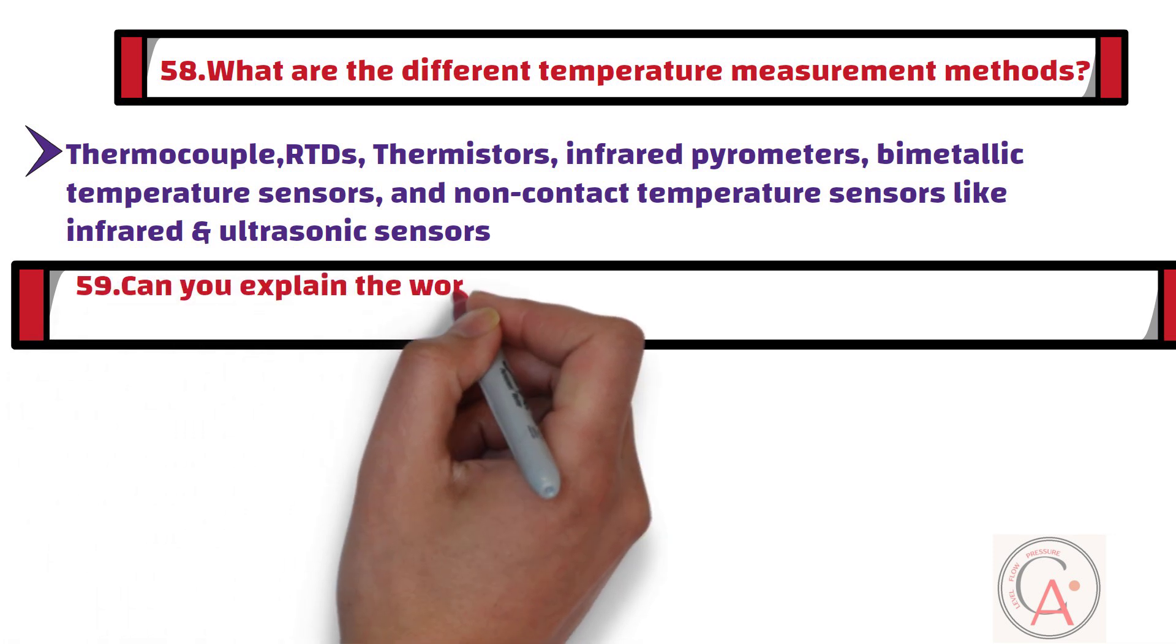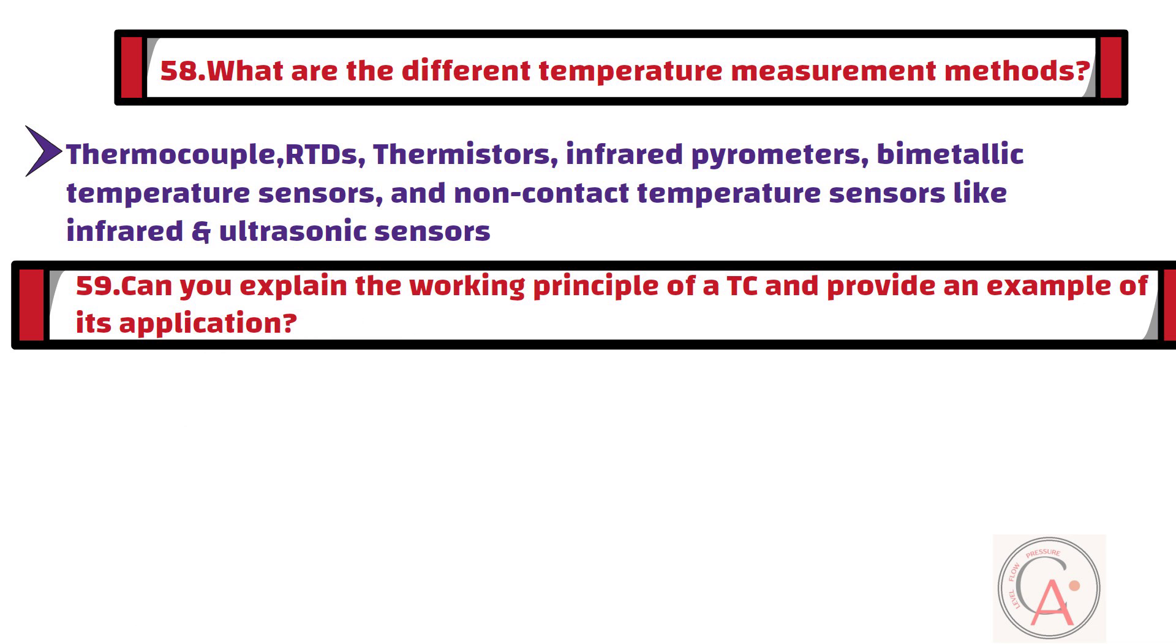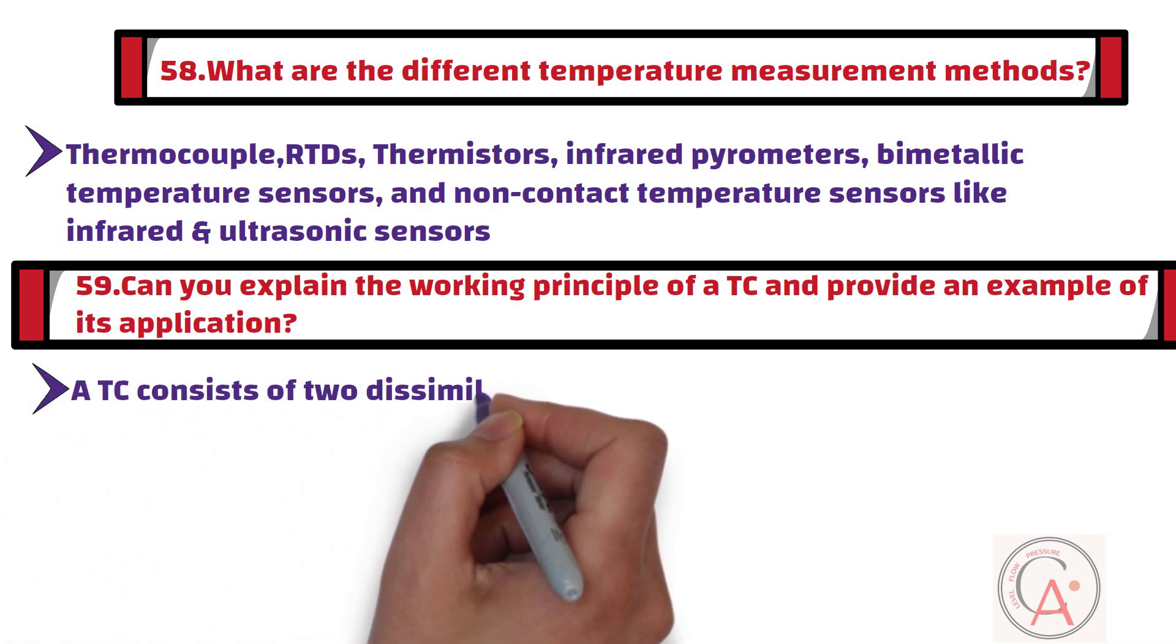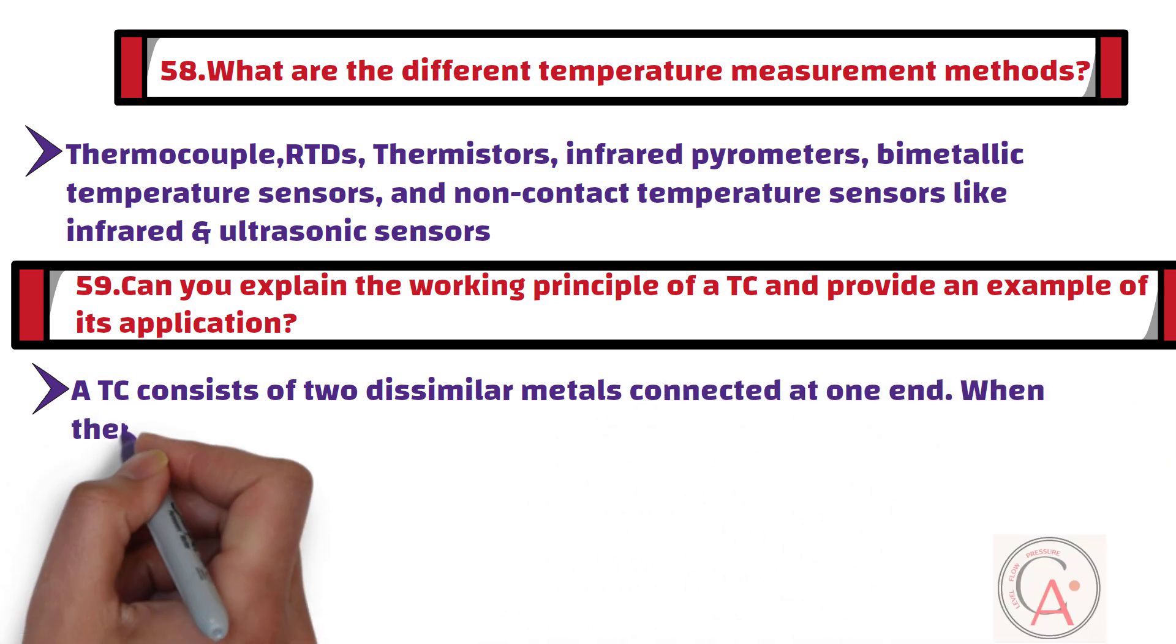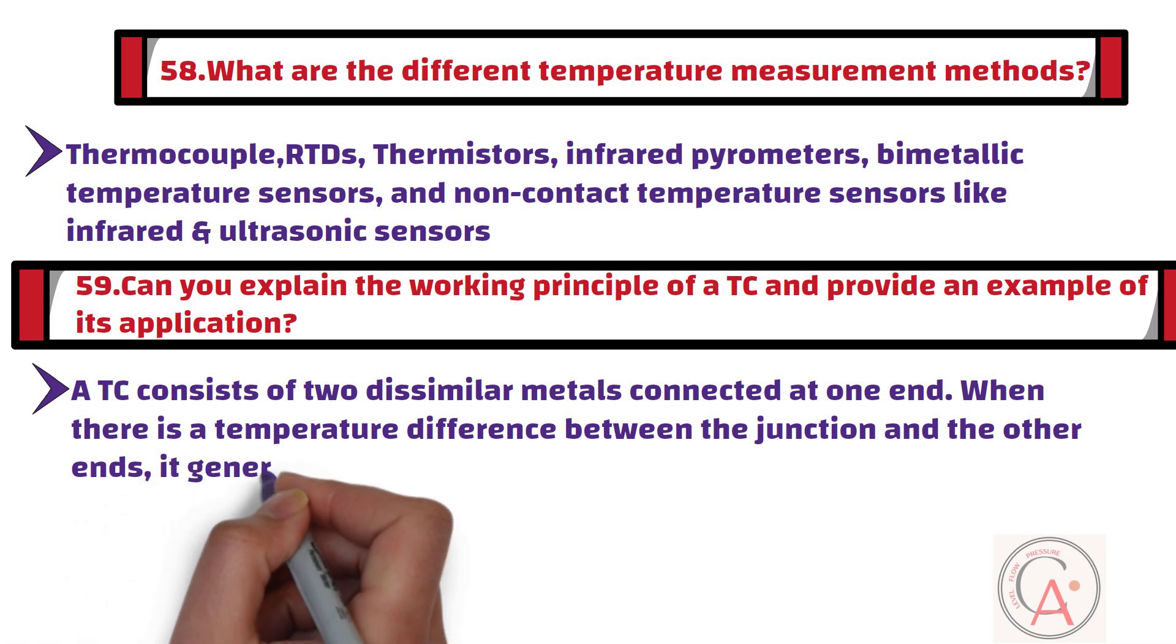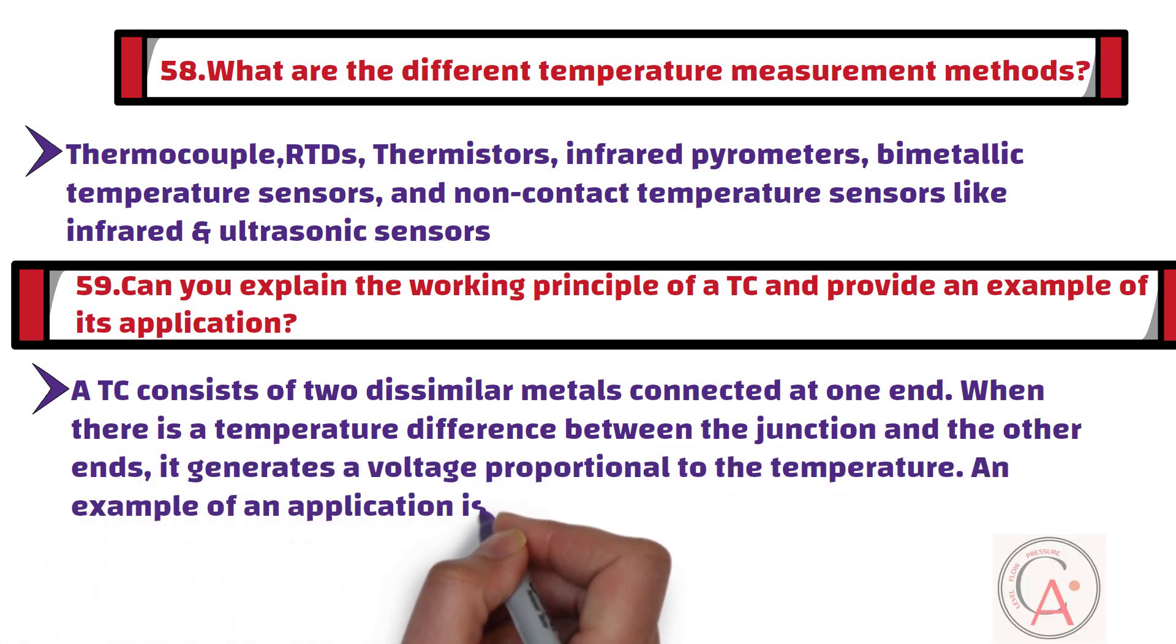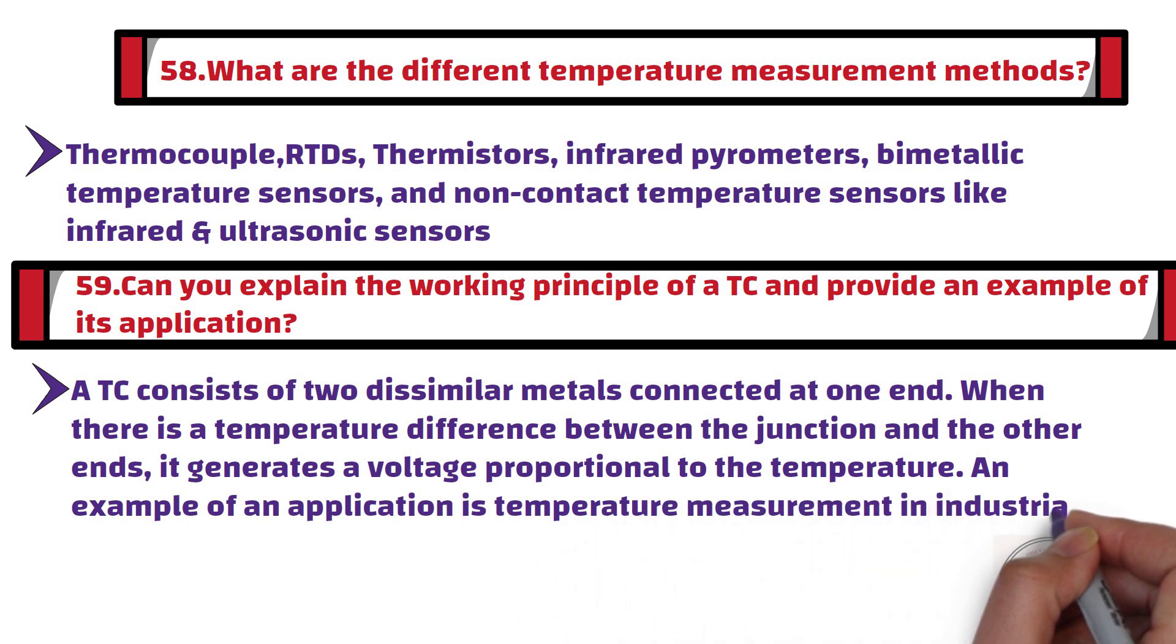Question number 59: Can you explain the working principle of a thermocouple and provide an example of its application? A thermocouple consists of two dissimilar metals connected at one end. When there is a temperature difference between the junction and the other ends, it generates a voltage proportional to the temperature. An example application is temperature measurement in industrial furnaces and ovens.